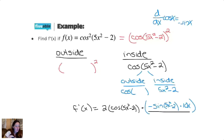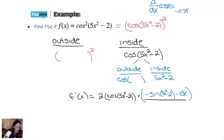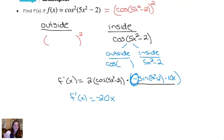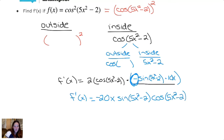We have our derivative. We'd probably want to clean this one up a little bit, especially for a multiple choice question. Depending on your teacher's expectations, a lot of teachers do want you to clean it up. So you would multiply that 2 in the front by the 10x and get 20x, but we also have a negative here, so we combine the negative, the 10x, and the 2 together to get negative 20x. The cosine and the sine — the order doesn't really matter, usually you see sine first. And that's our derivative.